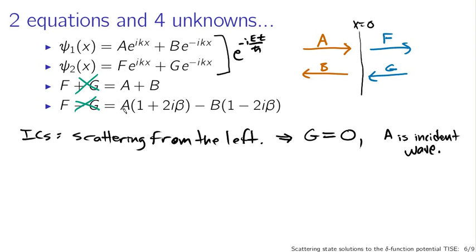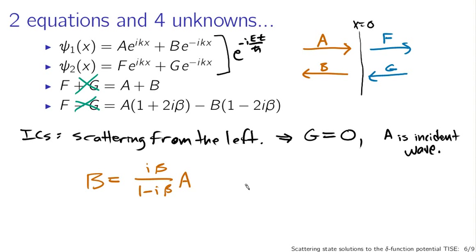Going back to these equations with G = 0 and solving for F and B in terms of A, what we end up with is: B = (iβ/(1 − iβ)) A, and F = (1/(1 − iβ)) A. So this tells us what B is in terms of A, and what F is in terms of A.